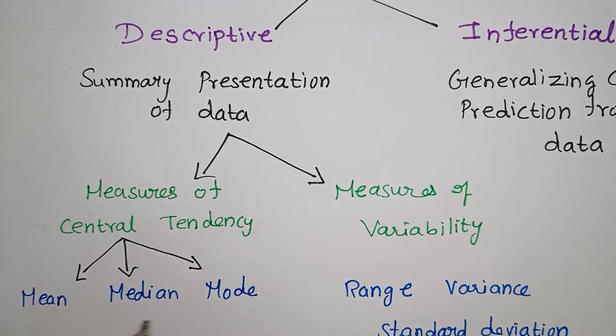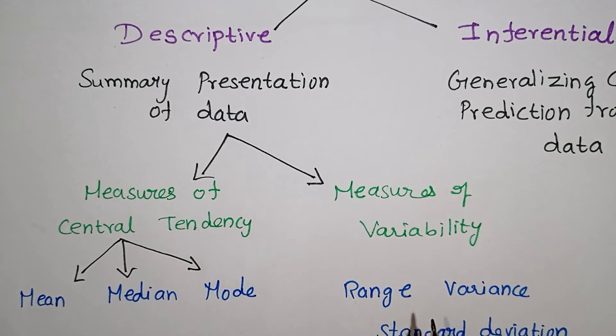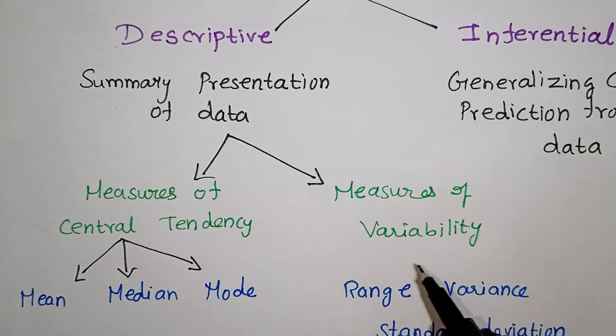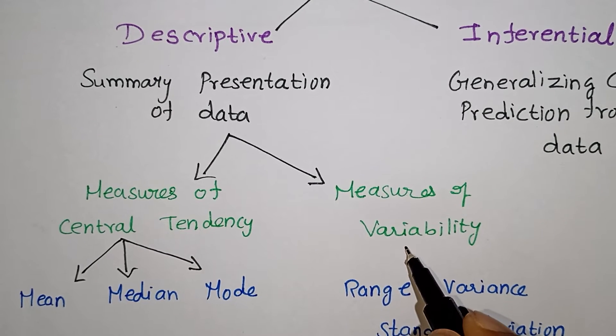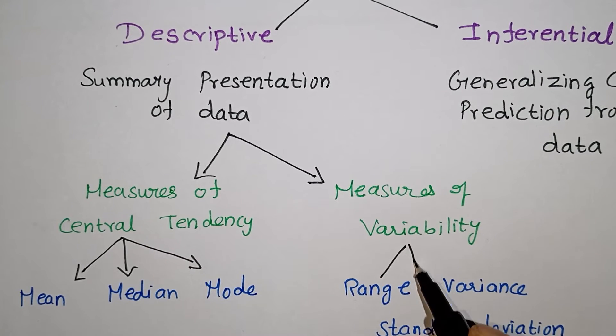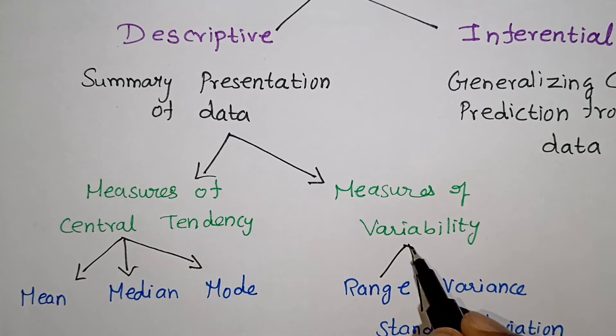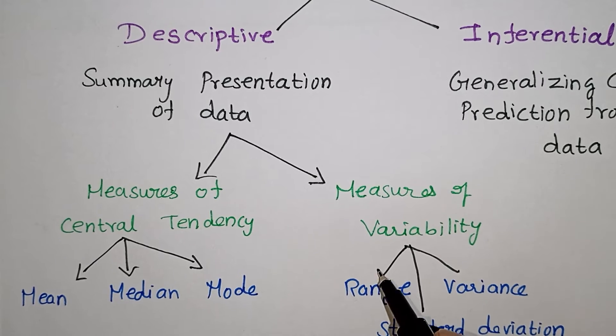Measures of variability include finding the range, standard deviation, and variance.